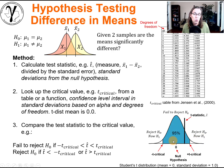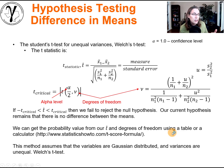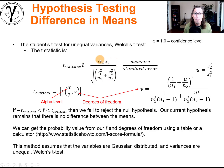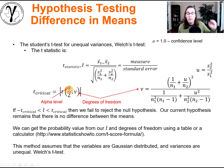If we're outside of the bounds, we reject the null hypothesis. If we're within the bounds, we fail to reject it — the null hypothesis lives to fight another day. That's the scientific method. The t statistic is simply the measure divided by the standard error, and we look up the t critical value using alpha divided by two since we have a two-tailed test.